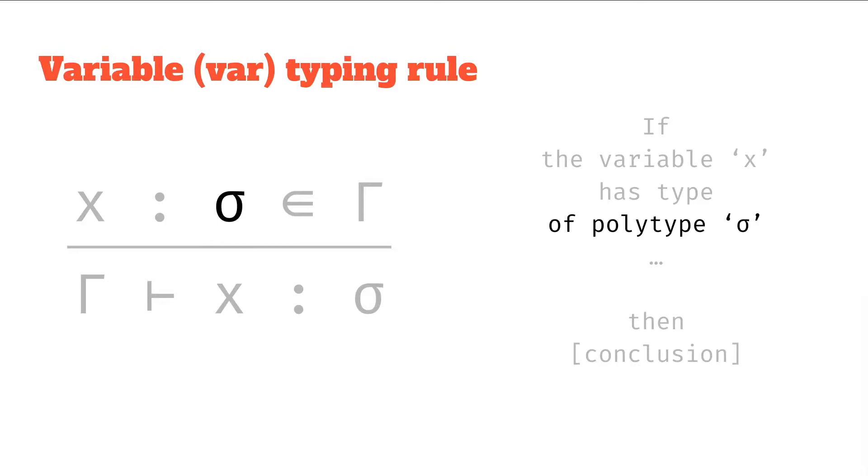And then this next bit, if you remember back from contexts, is where we have an assignment. We can say whether it's in the context or not, so this next symbol is the set in symbol, whether it's in the context capital gamma.